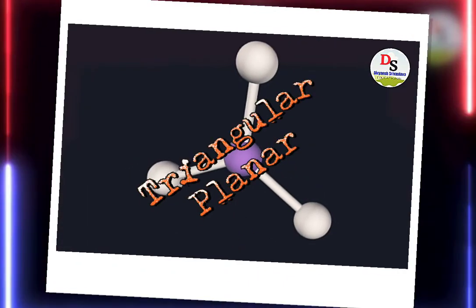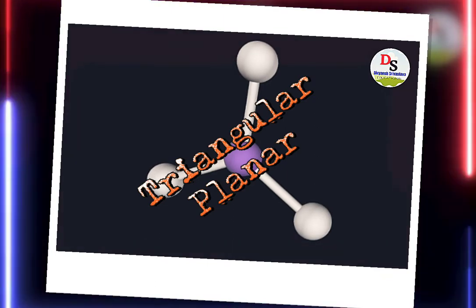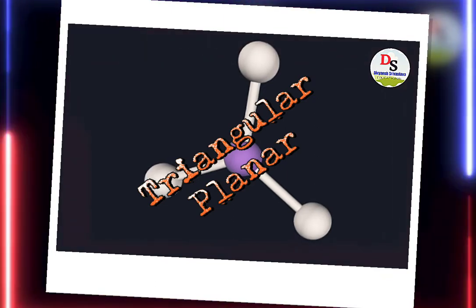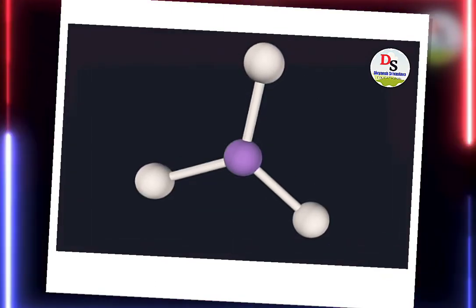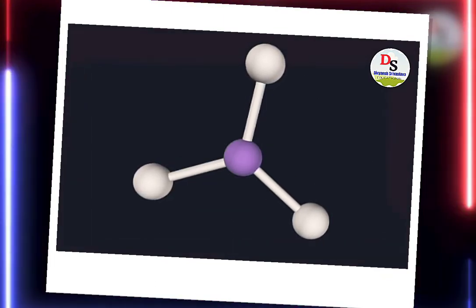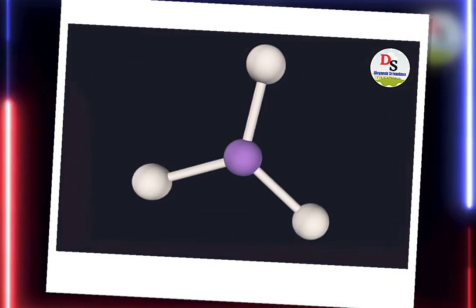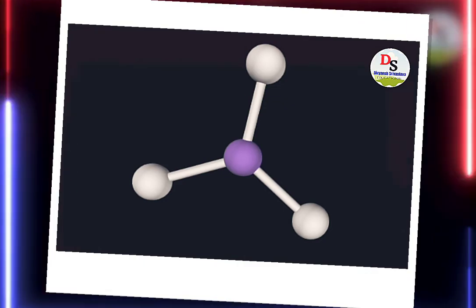It is the triangular planar structure of a molecule. It has 3 bond pairs and 0 lone pairs.